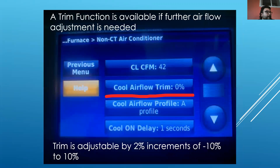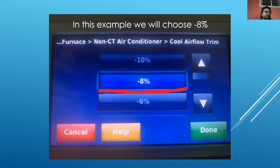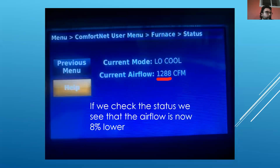Going back into the non-communicating air conditioner section, we can also set an airflow trim. If you'd like to reduce the fan speed a little — say you want to get closer to 350 CFM per ton instead of 400 — we can set a trim for that. Selecting trim shows you can go from negative 10 to 10% in 2% increments, though I've seen it up to 15% in some CTK-04 versions. In this case, we'll select negative 8% trim off the airflow. Going back, we verify it's been reduced by 8% — our current airflow is now 1288 CFM. You can fine-tune to do what's best for the system.